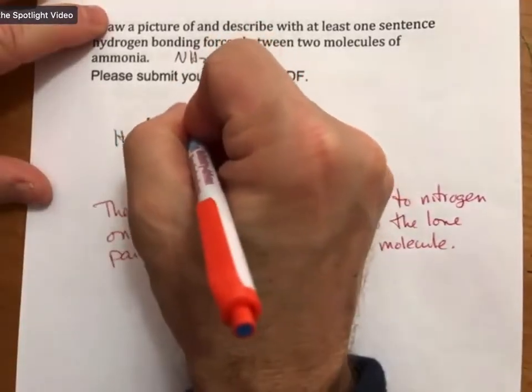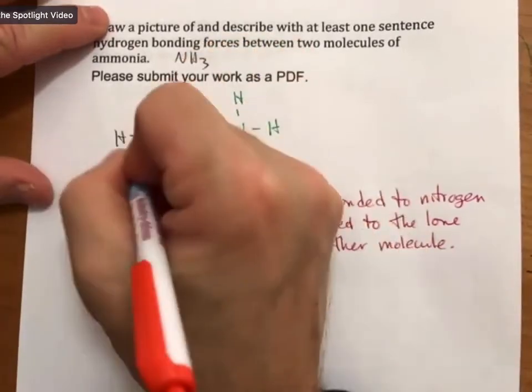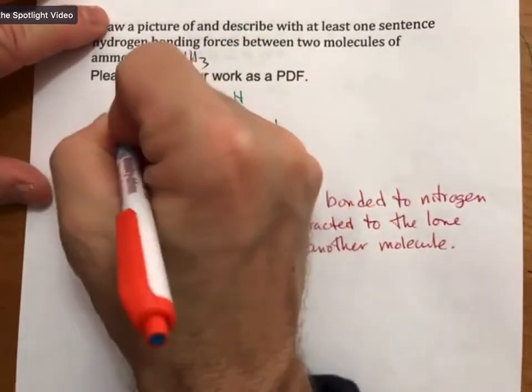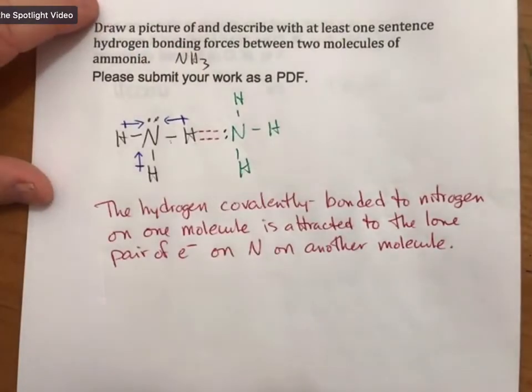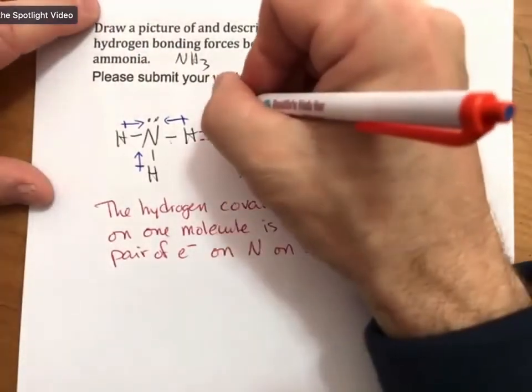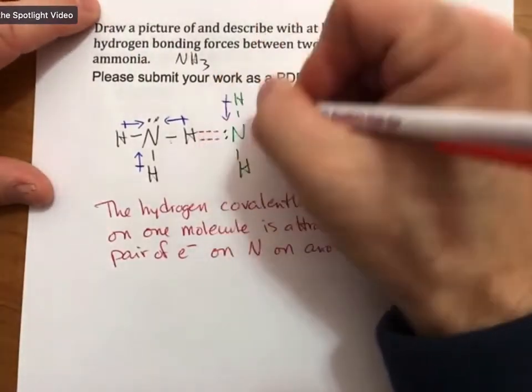So dipole arrows here are pointing towards the nitrogen. And dipole arrows here are pointing towards the nitrogen.